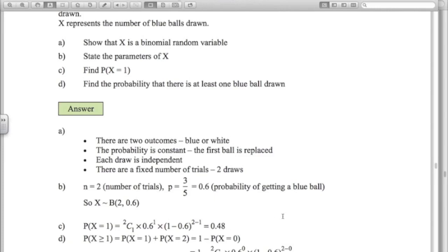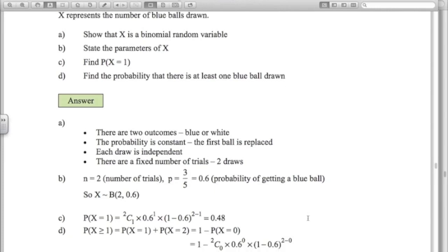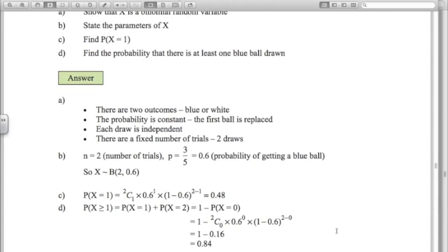The probability that X is greater than or equal to 1. You could say that's the chance of getting one or two blue balls. Or it's just as easy to say 1 minus the probability that you get no blue balls. That's an important one, especially if we had more draws here, like 10 or 12 draws. And I said, what's the chance of getting at least one? It's much easier to say 1 minus the chance of getting no blue balls here. So in the formula, N is 2, the little r is 0, P is 0.6. And I've just put that into the formula. And that gives me 0.84.